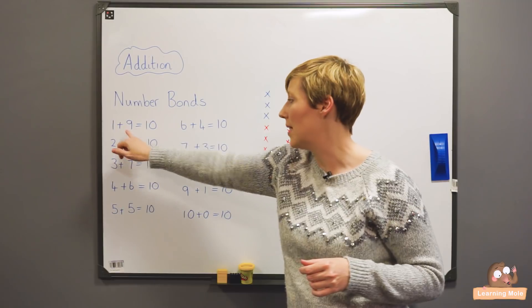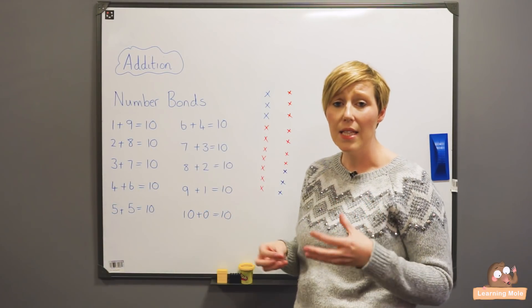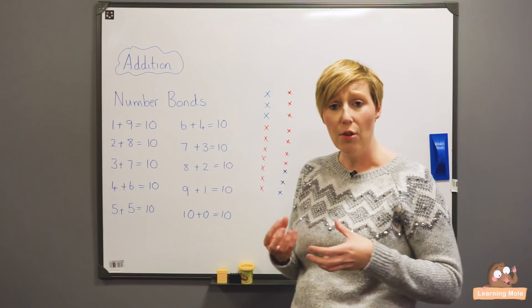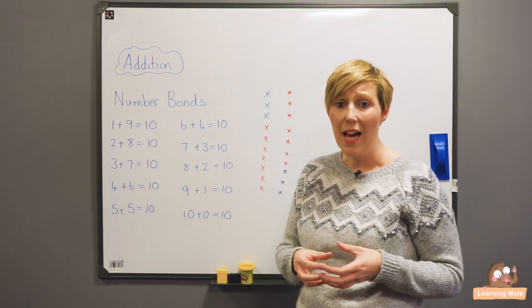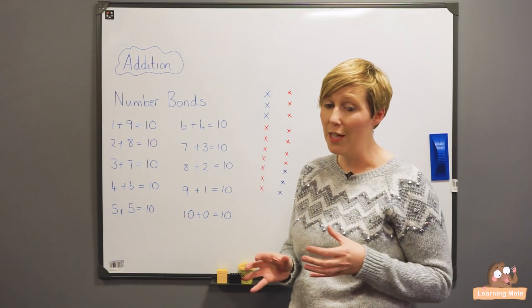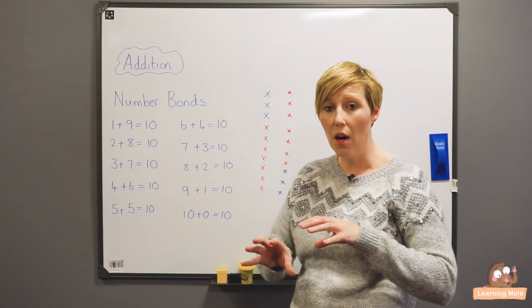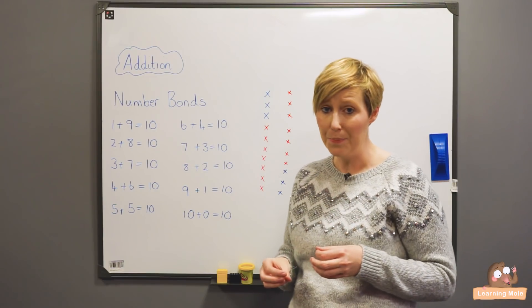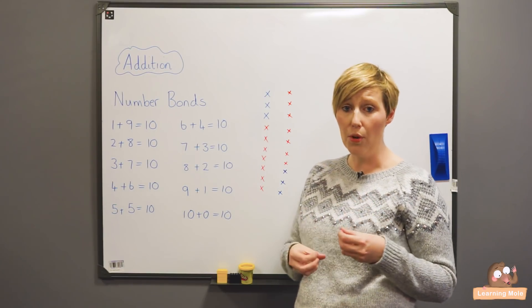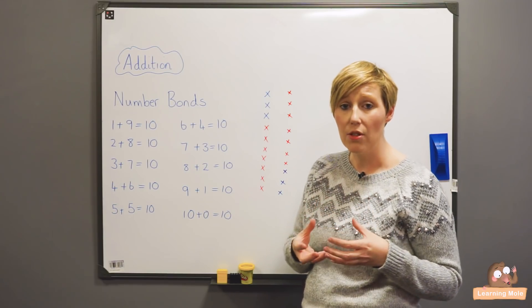So they need to see that one plus nine is exactly the same as nine plus one, and this is another key part of addition to show children that actually addition can be done in any order. It doesn't matter which way around the numbers are, you will still get the same answer, and that's a very, very important point that children need to learn.